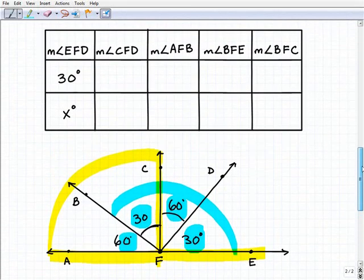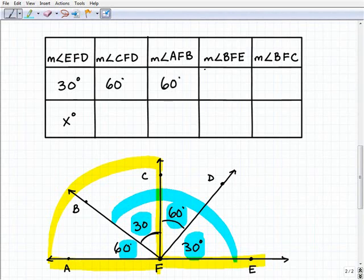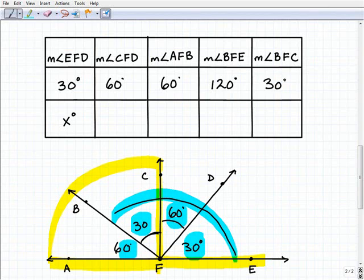Let's fill in our chart so we don't mix things up. Measure of angle CFD: that was 60 degrees. The measure of AFB is also 60 degrees. The measure of BFE: we've got to reference our chart. BFE is going to be this total sum right here, so this is going to be 90 and 30, that will be 120. And the measure of BFC is 30 degrees. Does that make sense to everybody?